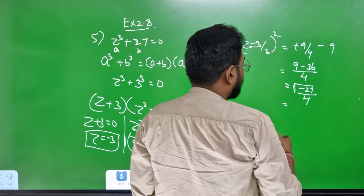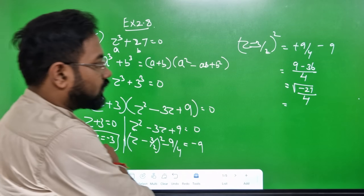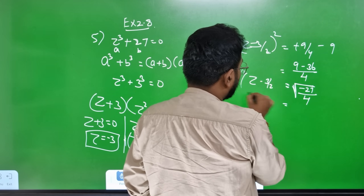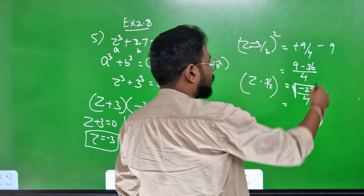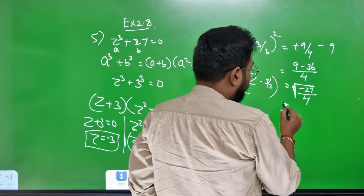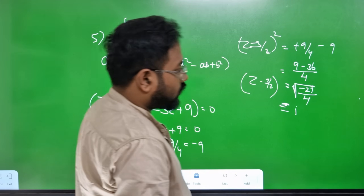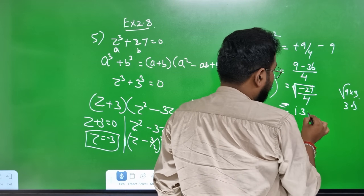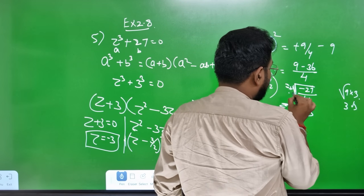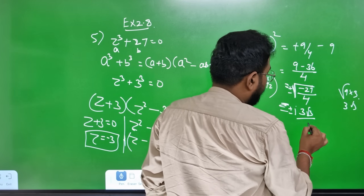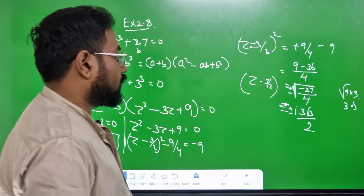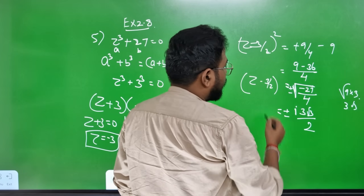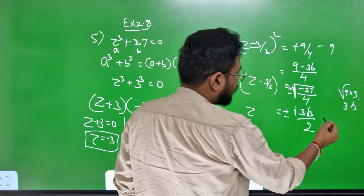So plus or minus 27. Minus 27 by 4 equals minus 27 by 4. We have to divide: z minus 3 by 2, whole square equals minus 3 by 2, whole square equals minus 6. If minus 1 equals minus i, then i equals i. Root 27 by 9 by 3 will be 9. Divide by 3 by 2. i equals 3 by 3. So minus i equals 3 by 3. Is equal to plus or minus i. Is equal to minus 3 by 2, plus 3 by 2.